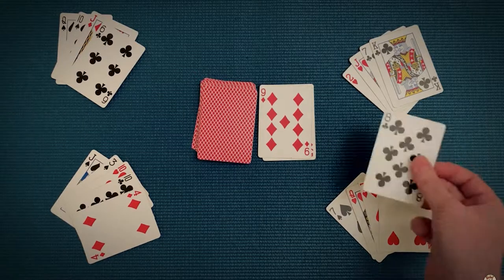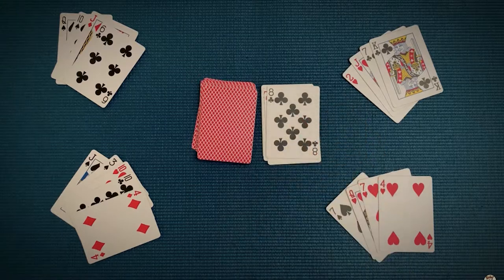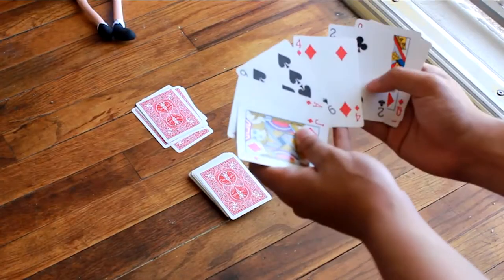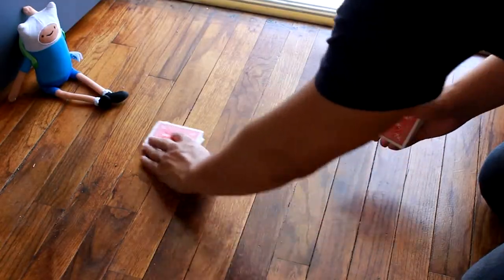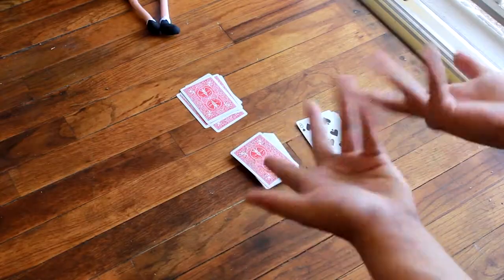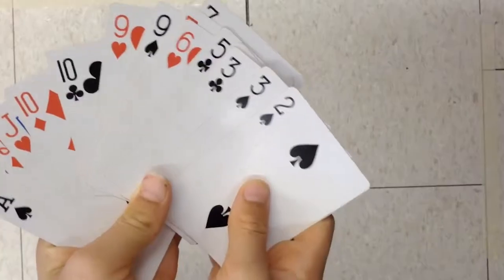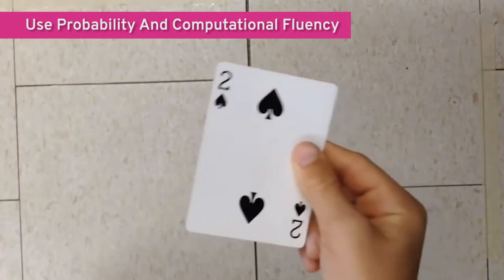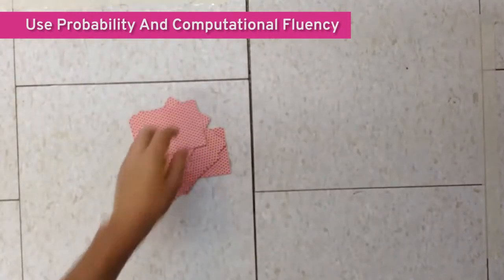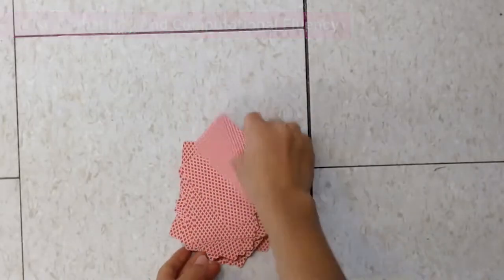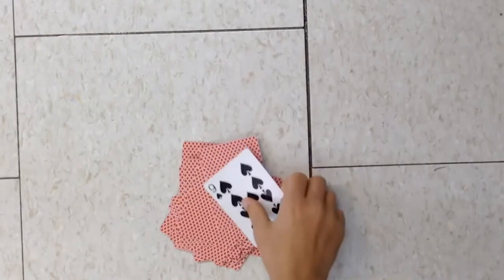Crazy 8's is another great game for teaching algorithmic thinking, probability, numeracy, patterns, and computational fluency as students try to be the first to get rid of their cards. Cheat is another fun game where students can use probability and computational fluency to figure out who is telling the truth and who is cheating as they place their cards in the center pile.